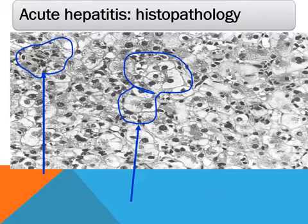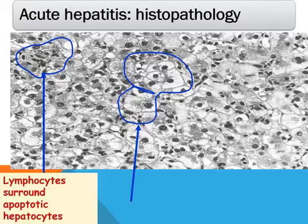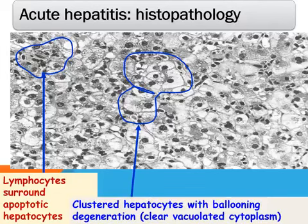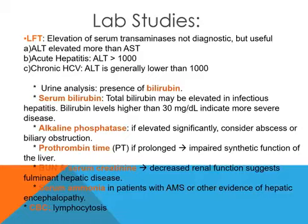This histopathological image shows lymphocytes around apoptotic hepatocytes and a cluster of hepatocytes with balloon degeneration, reflecting damage to these hepatocytes. Regarding investigations, we usually perform liver function tests.